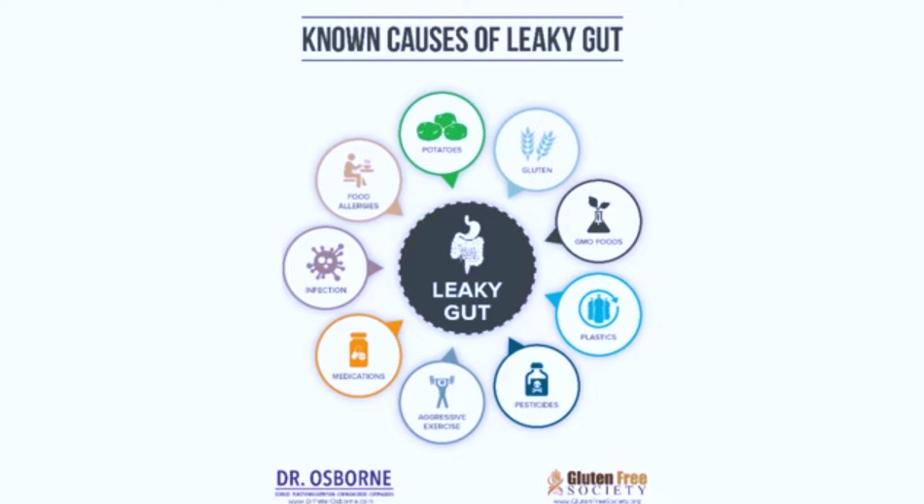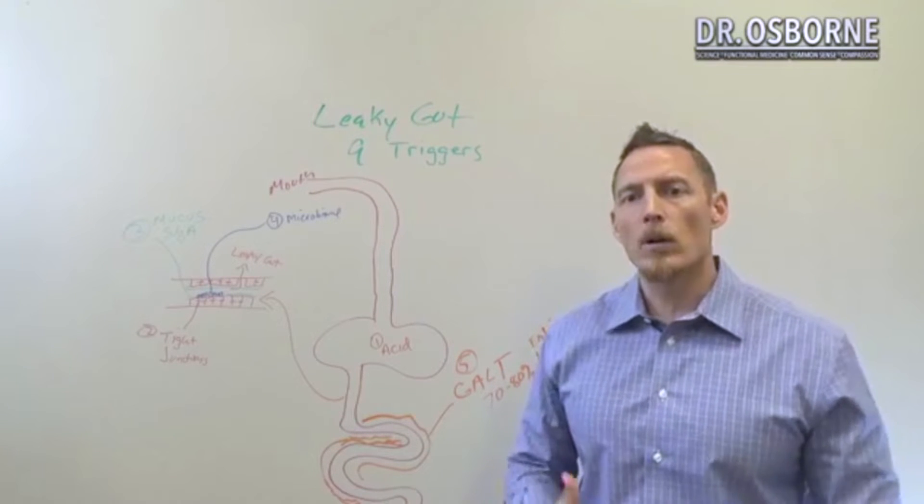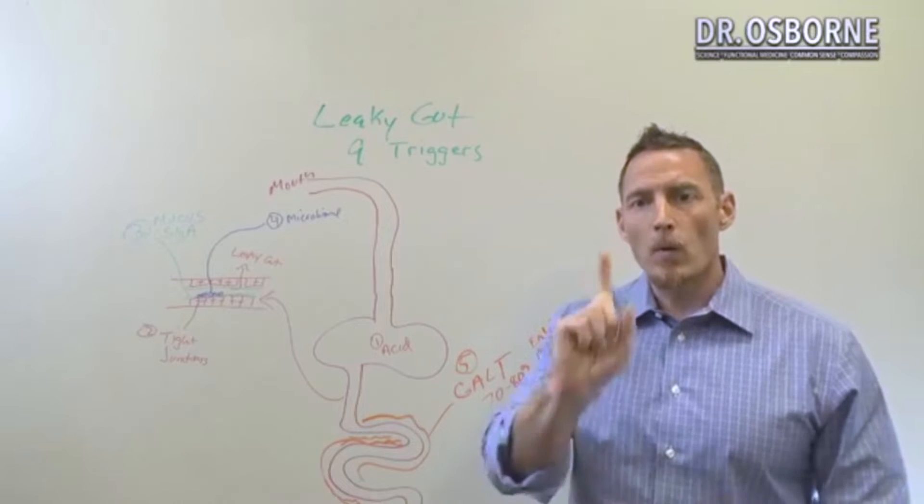And remember, your gut can only take so much damage. If one wall goes down, you've still got four other walls, but if two, three, four walls go down, that's when you start being more and more compromised. Now, number one,